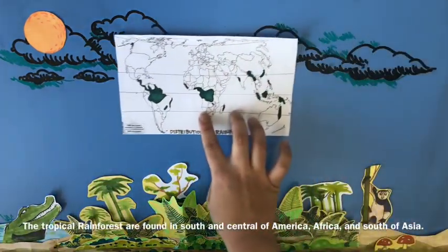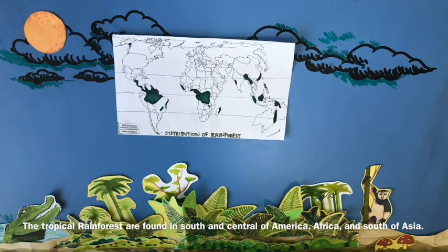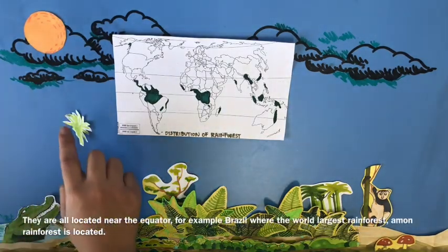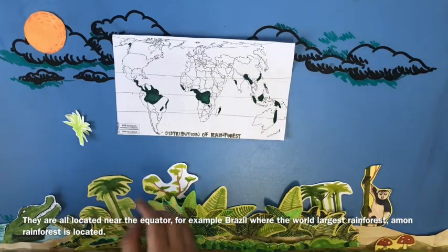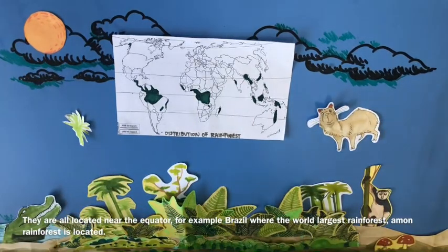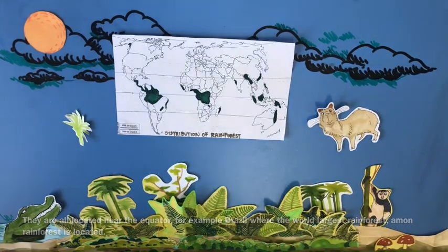Tropical rainforests are found in south and central America, Africa, and south Asia. They are all located near the equator — for example Brazil, where the world's largest rainforest, the Amazon Rainforest, is located.